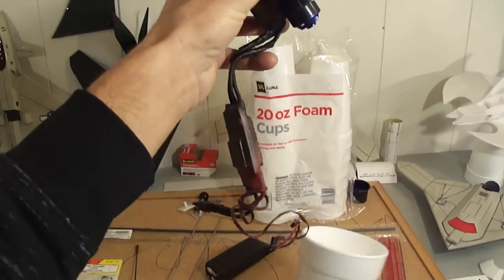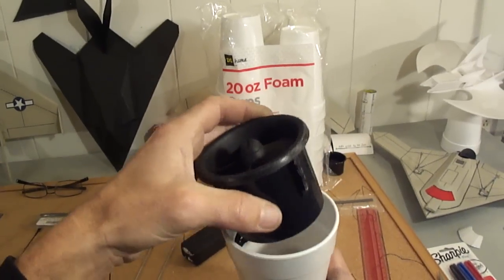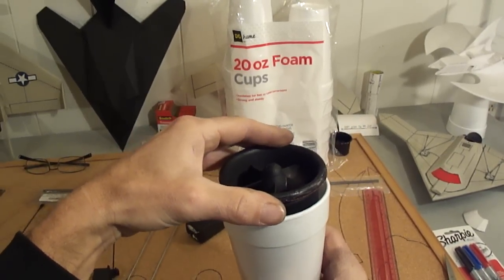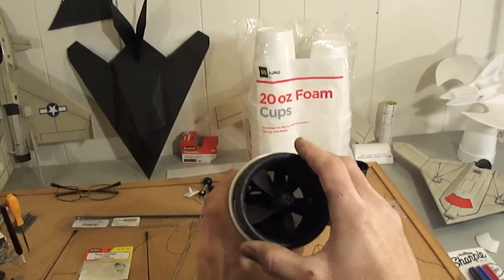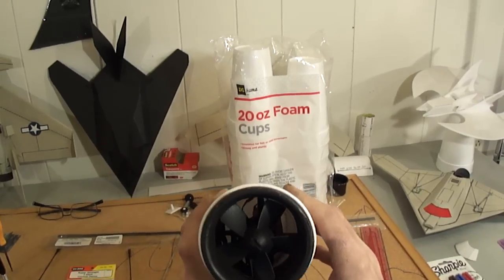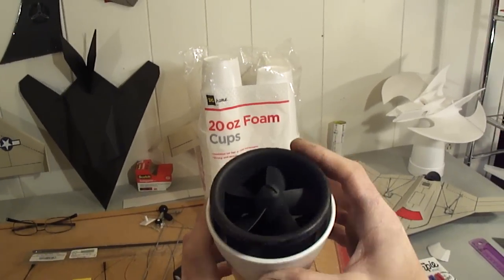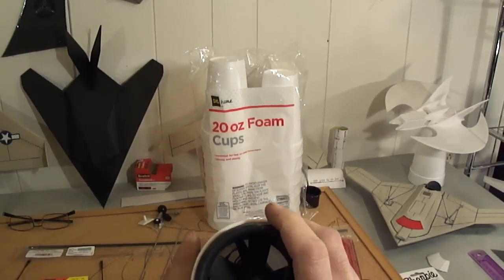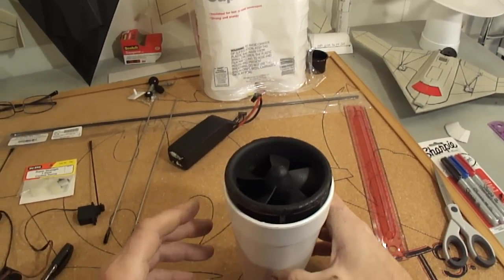What we're going to do, I hooked up my ESC already to my ducted fan unit, just going to take and stick this down in there. I want to make sure you're lining up real nice. So I just go ahead and center it on there, just like so.